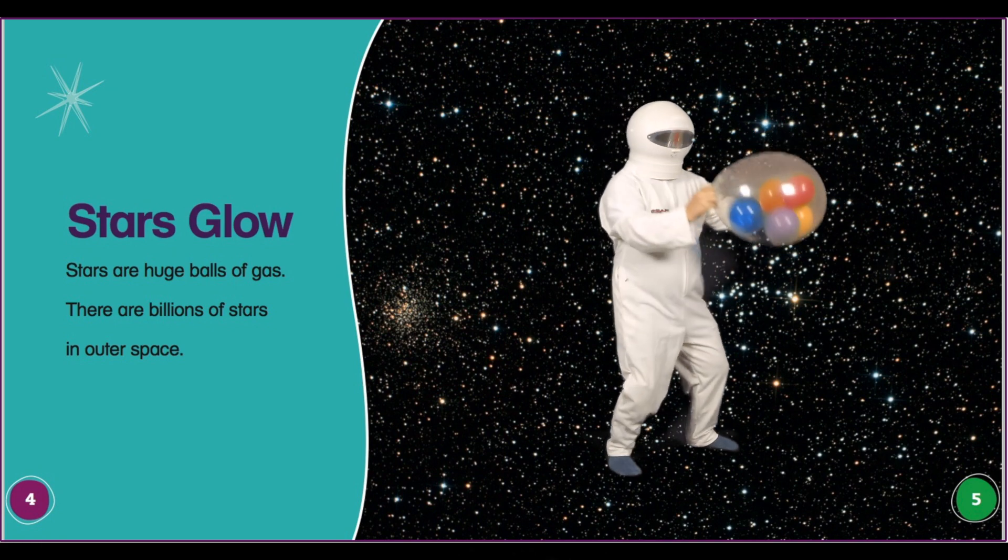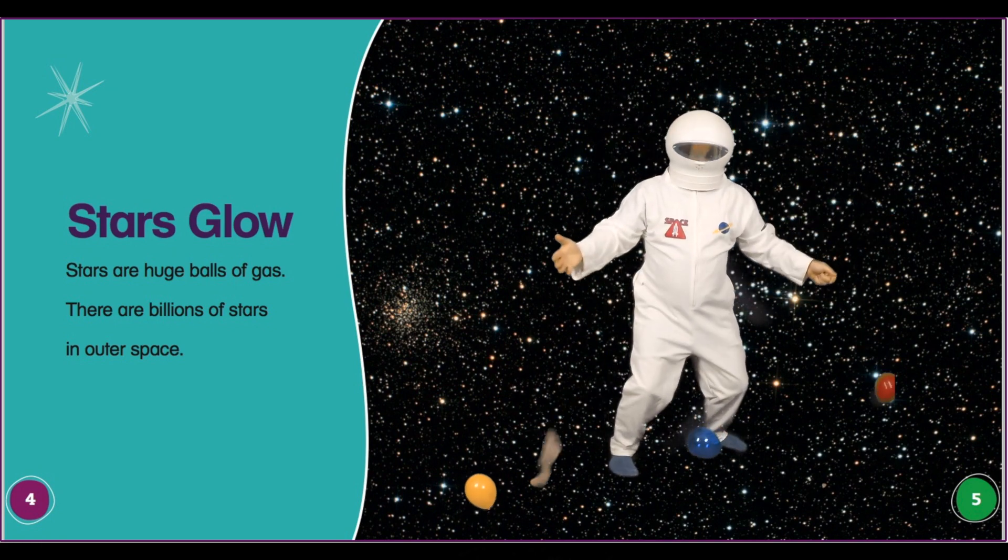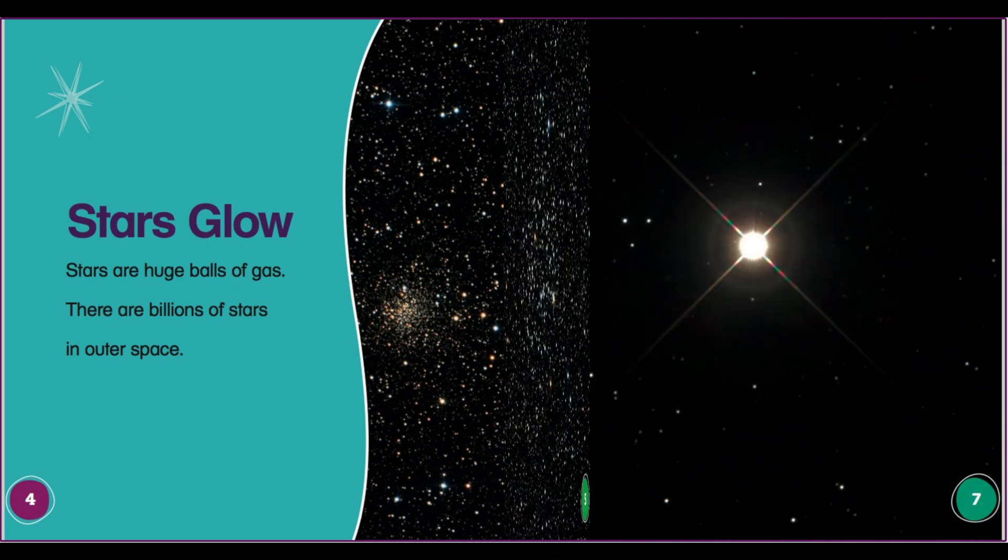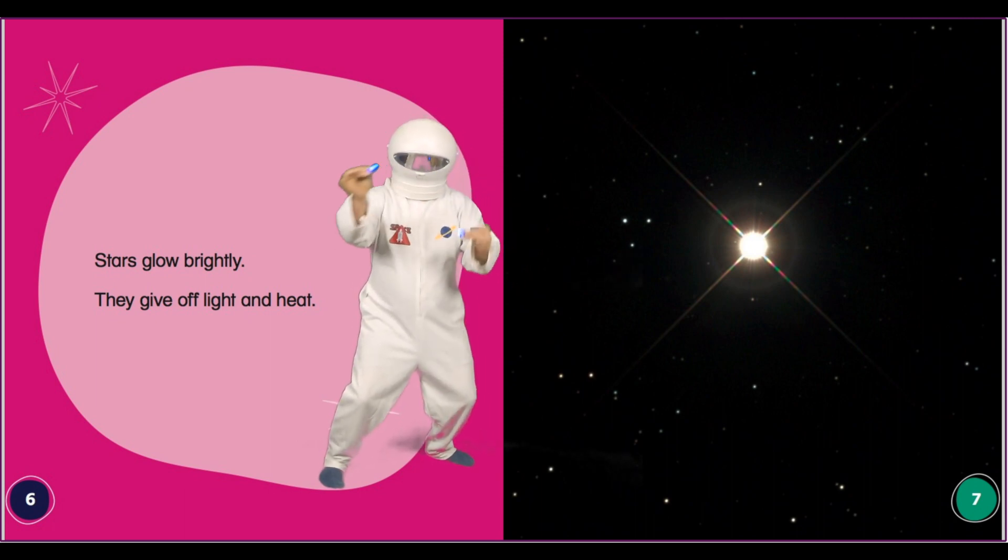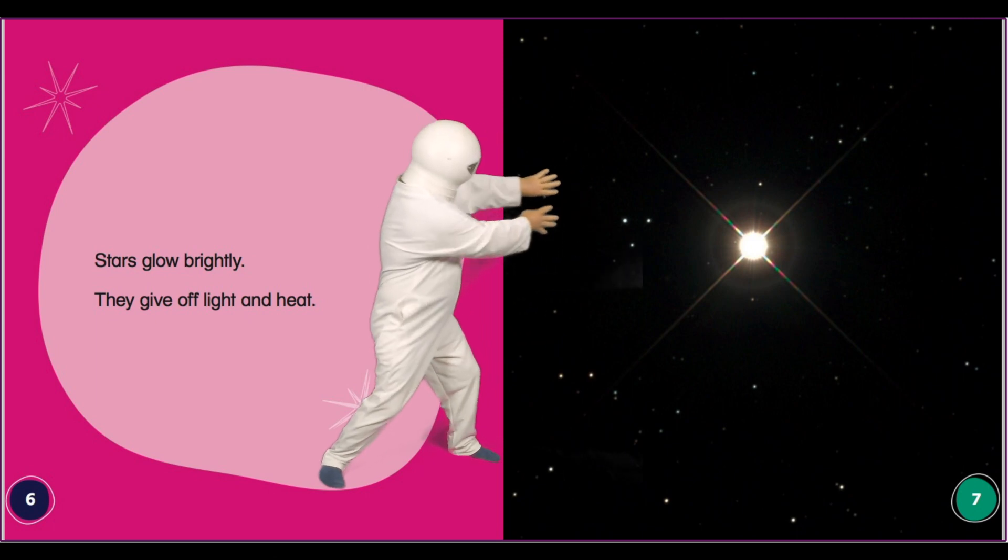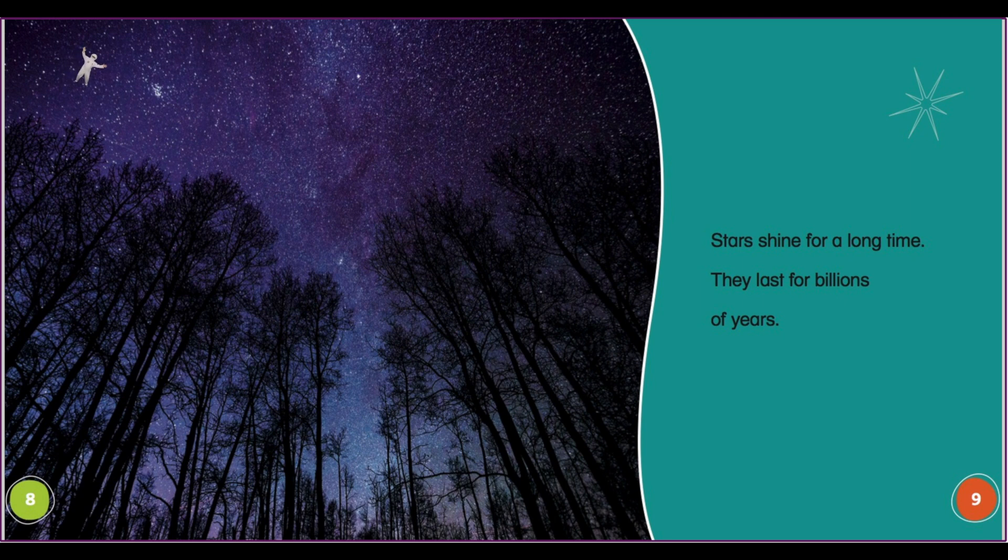Stars glow. Stars are huge balls of gas. There are billions of stars in outer space. Stars glow brightly. They give off light and heat. Stars shine for a long time. They last for billions of years.